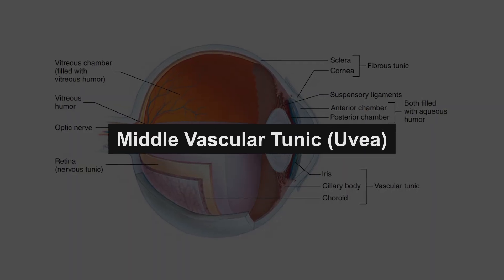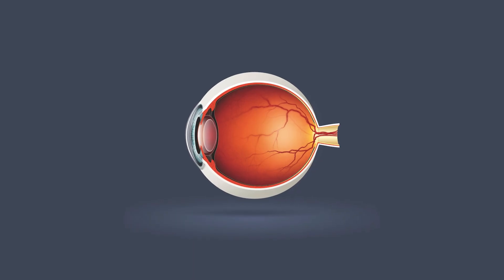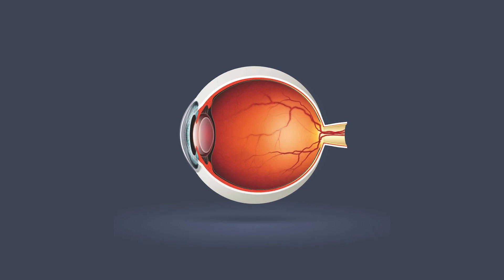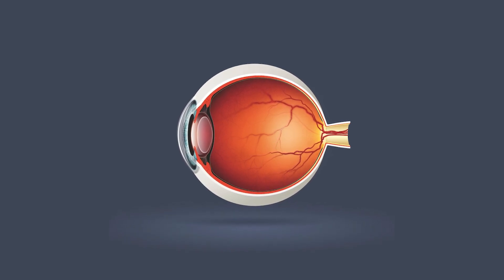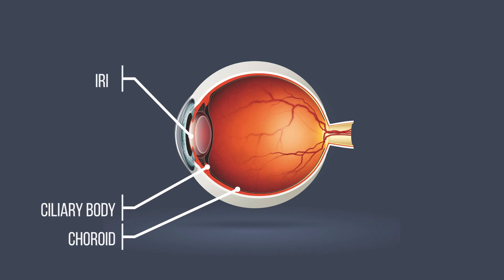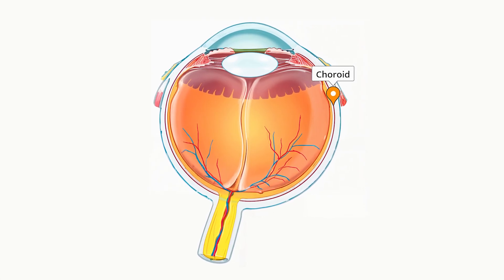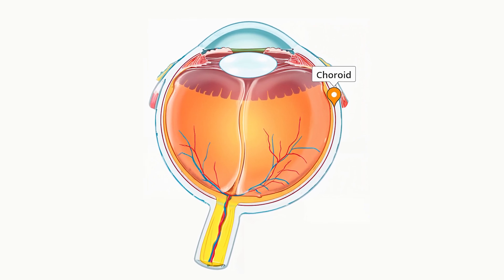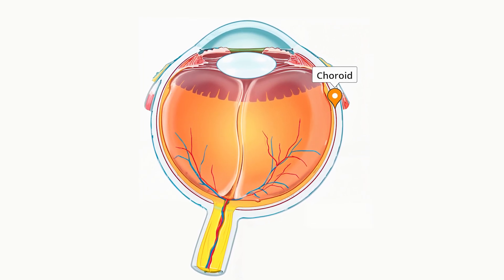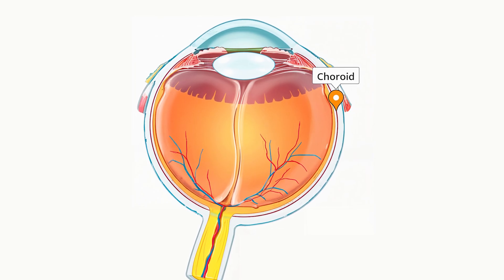Situated beneath the fibrous tunic is the vascular layer, also known as the uvea, which comprises the choroid, ciliary body, and iris. The choroid is a pigmented layer rich in blood vessels that supplies oxygen and nutrients to the retina while absorbing stray light to prevent image blurring.